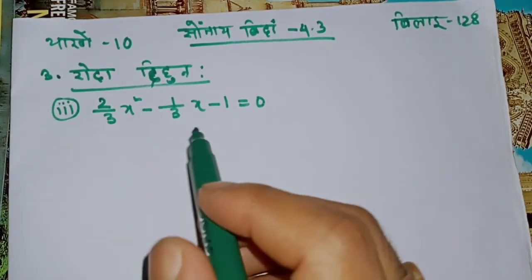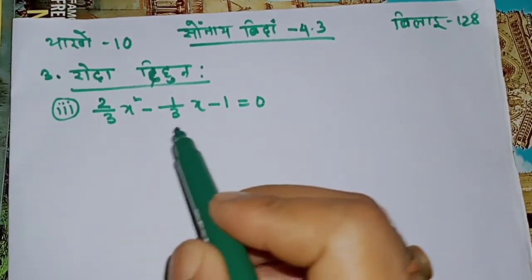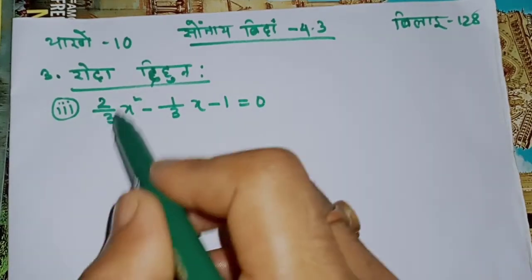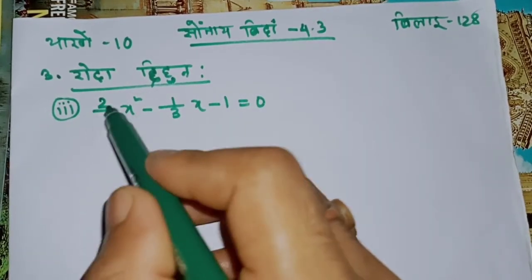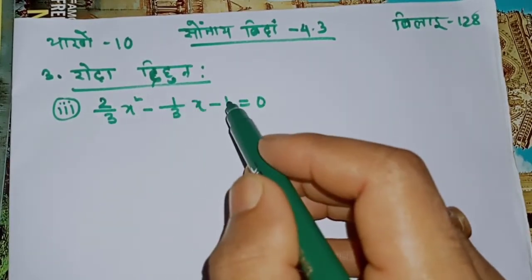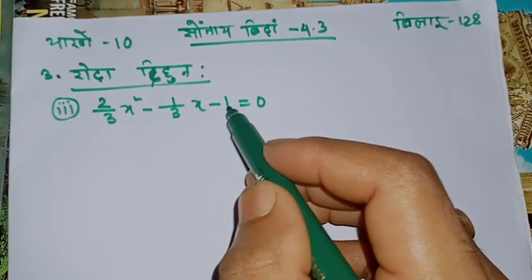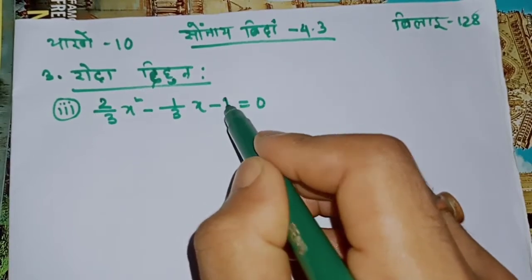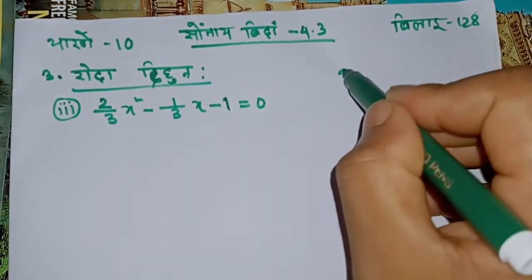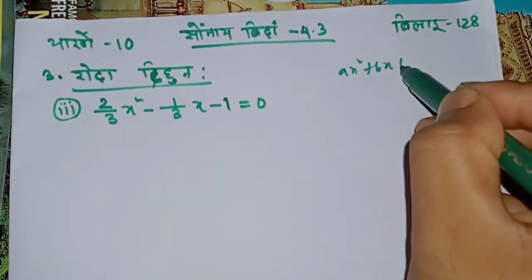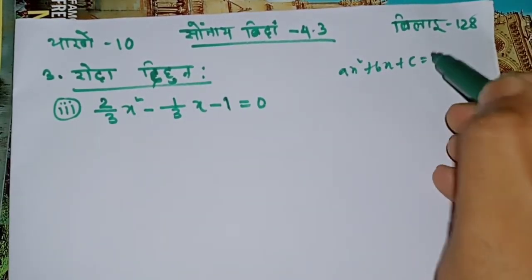This is 3x⁴ - 1 by 3x - 1 is equal to 0.